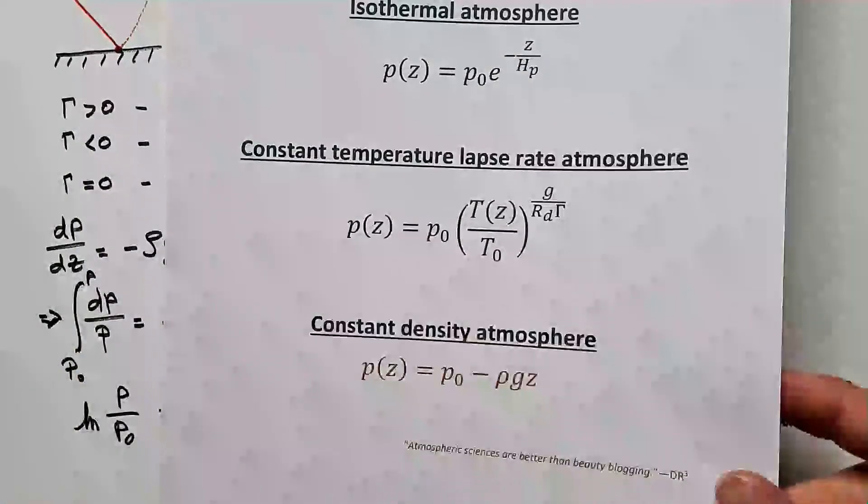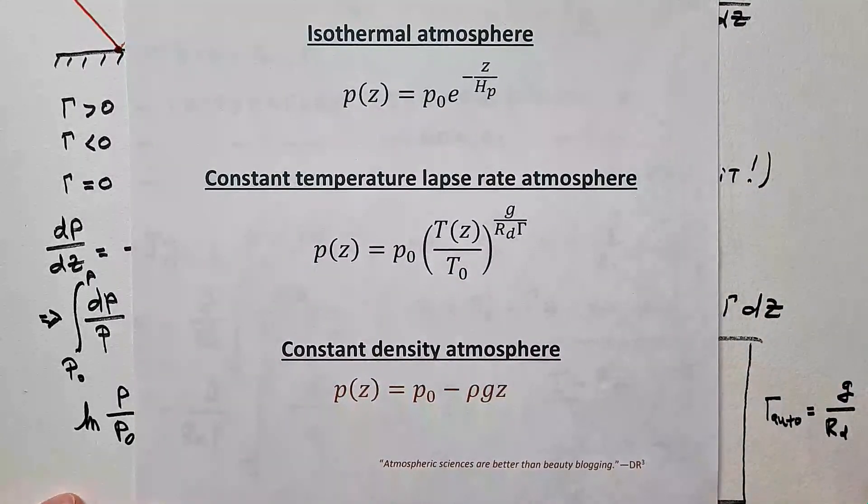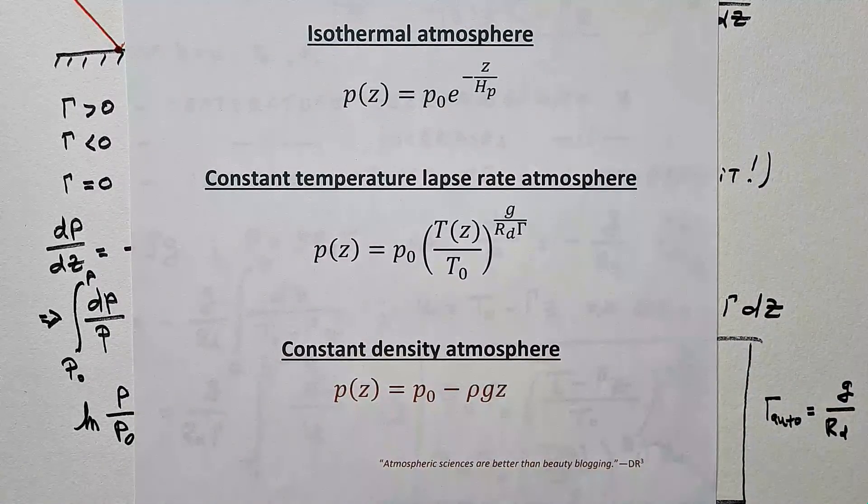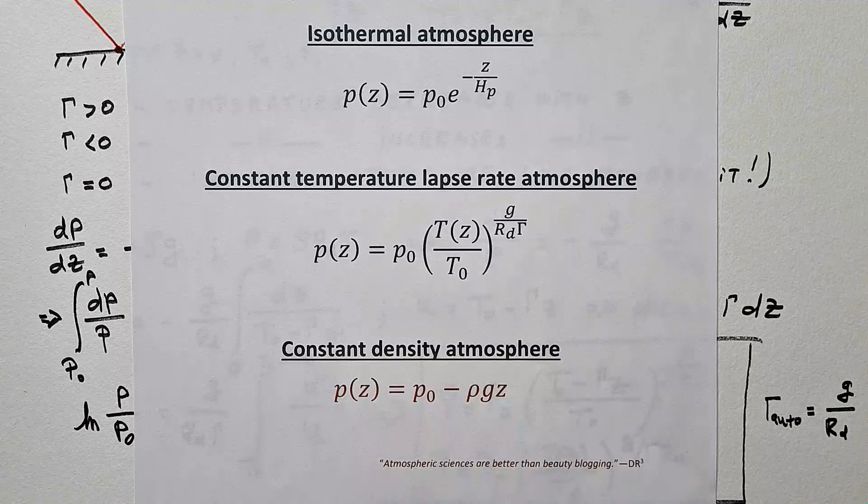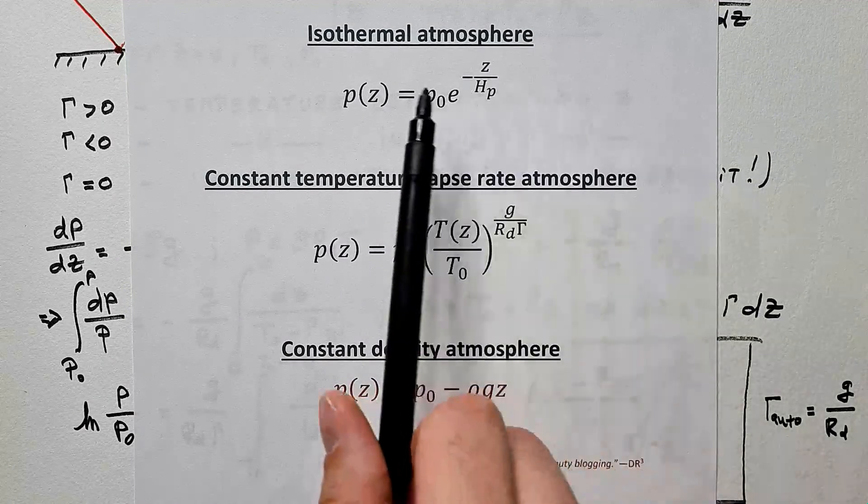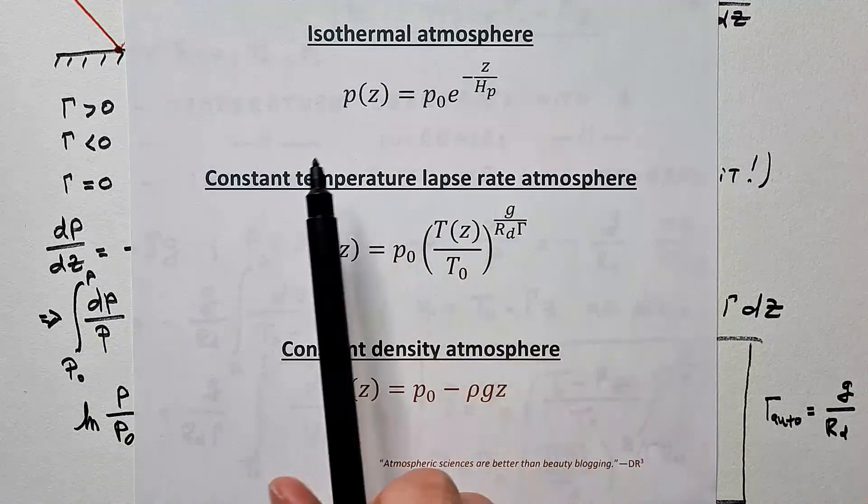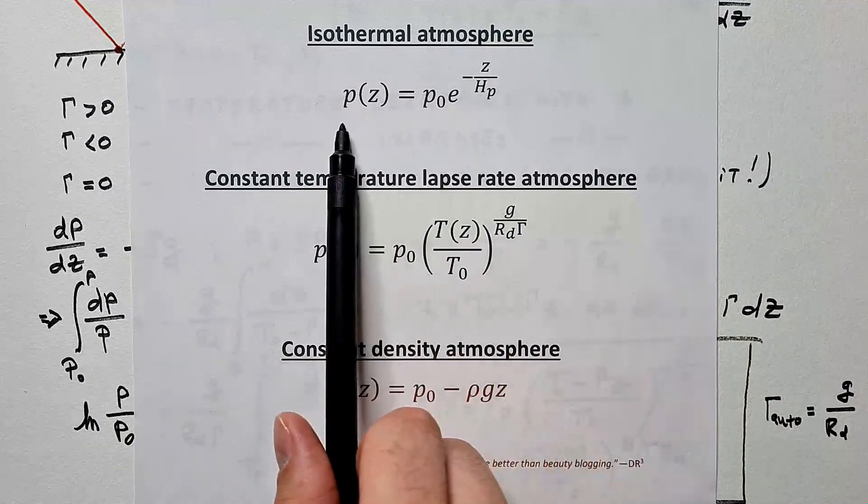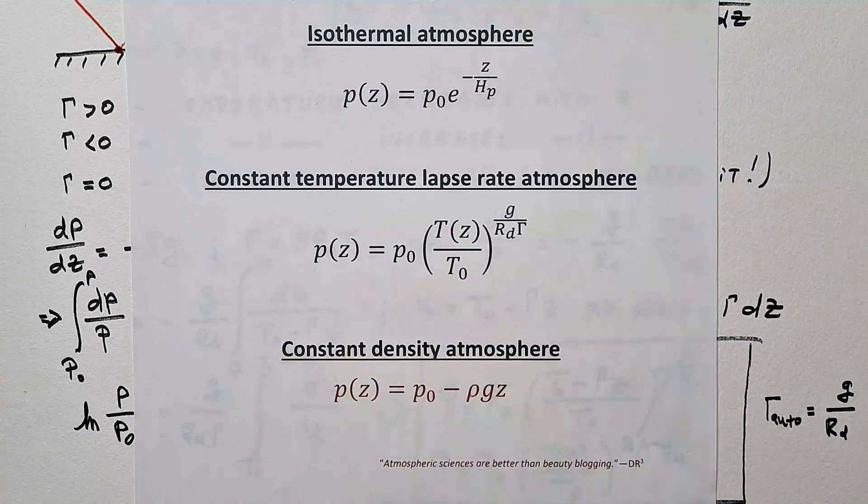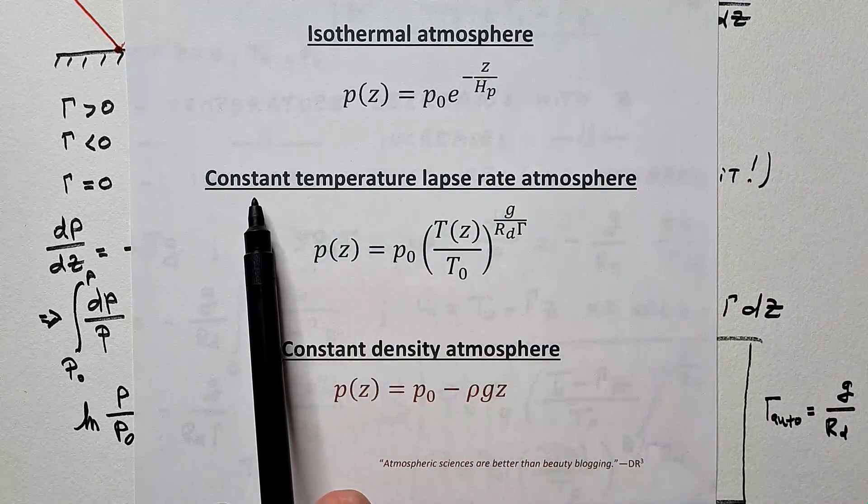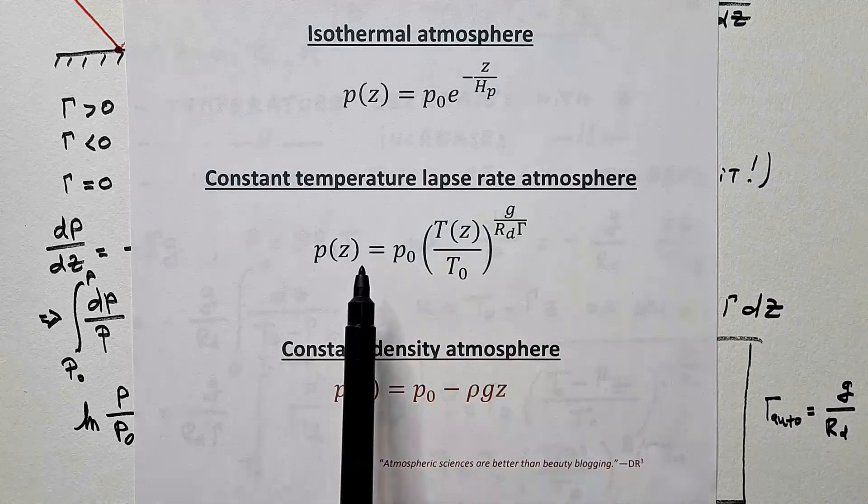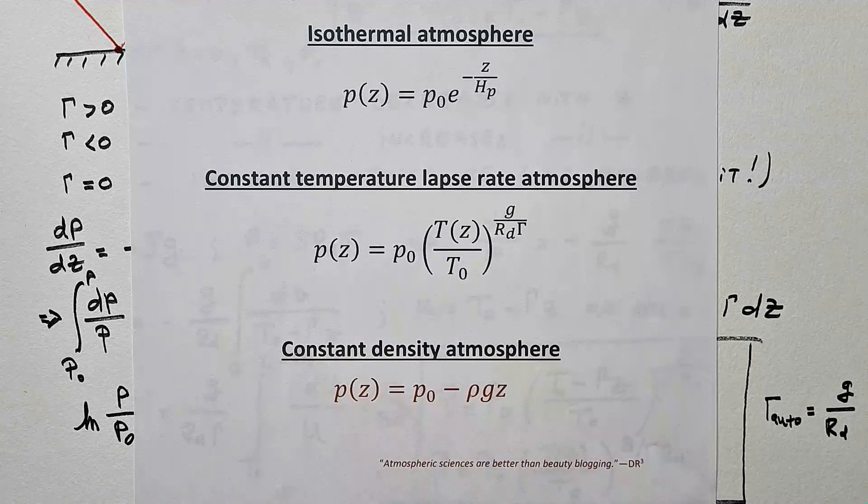In the analytical form, this would be a beautiful summary of what we derived so far in isothermal atmosphere where temperature is constant. This is how pressure decreases with height. Separate video on that. Where we have constant lapse rate, this is how pressure decreases with height.